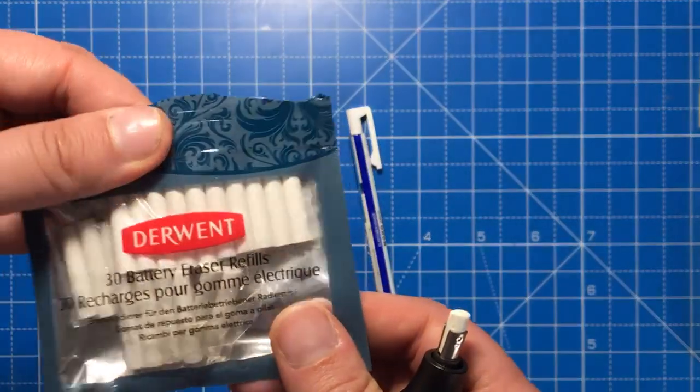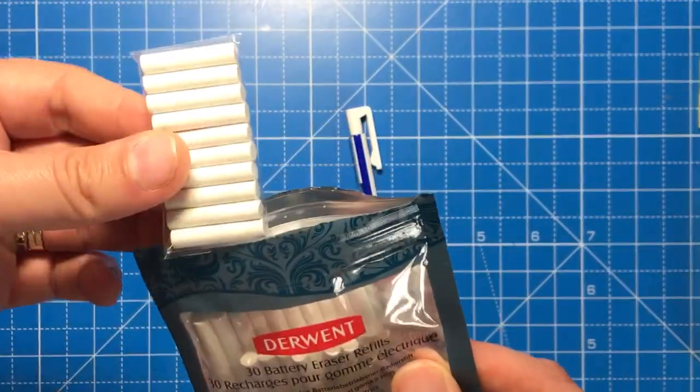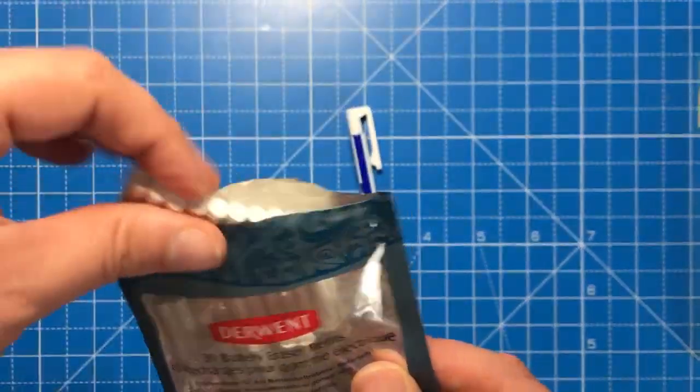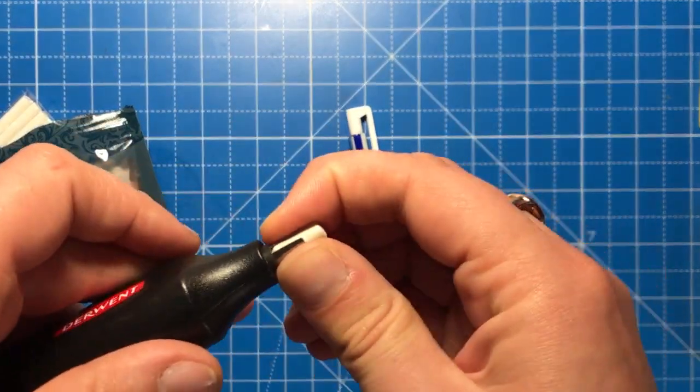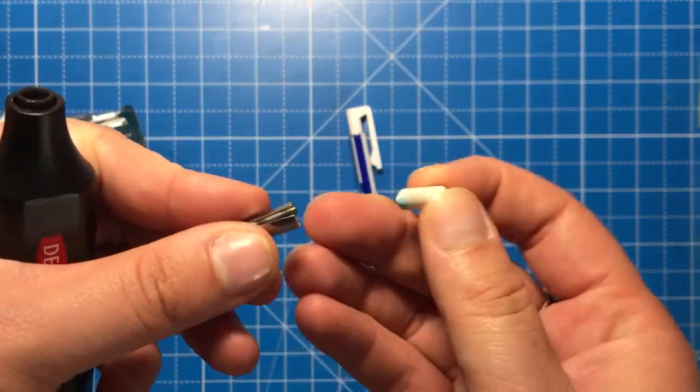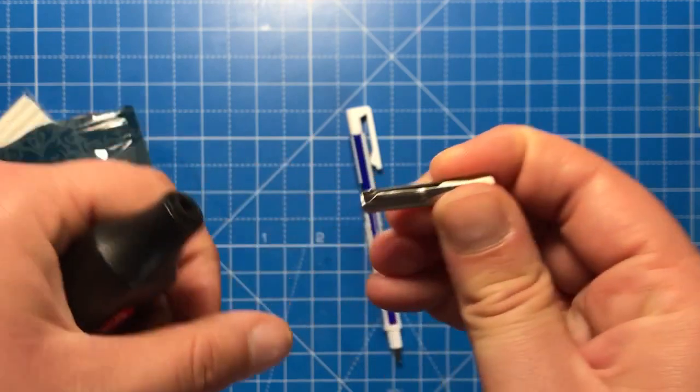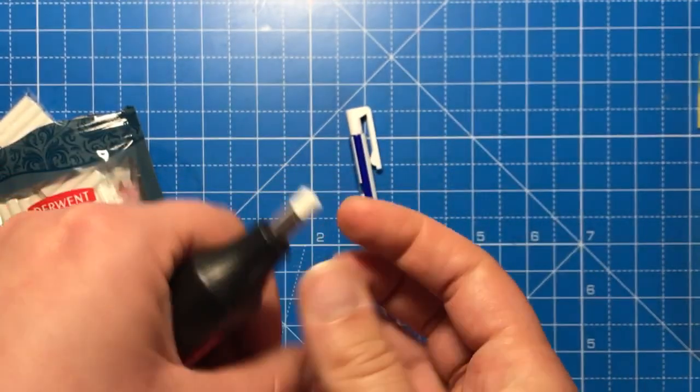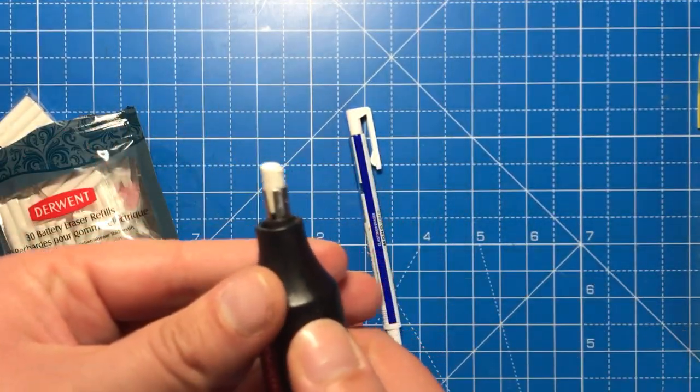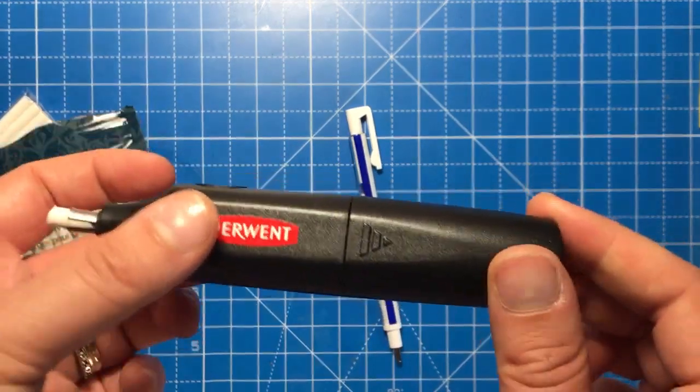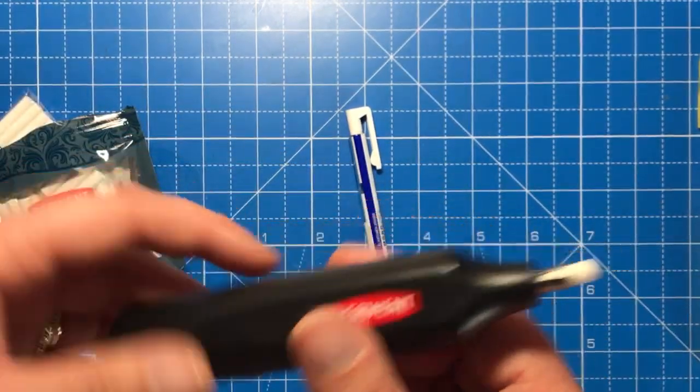The eraser refills are also available, they're about that long when you get them new and it's really easy to replace. You just pull out this silver bit here, pull out the eraser, put the new one back in and it grips it. I use that very often on every single project really.